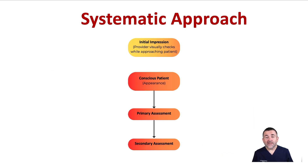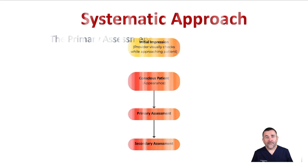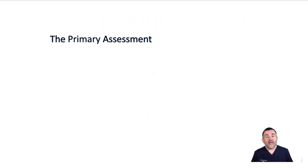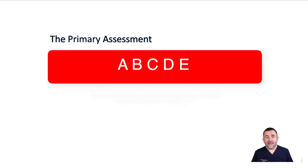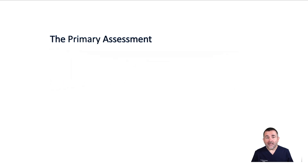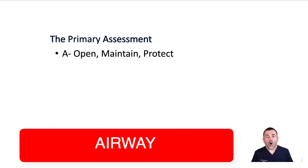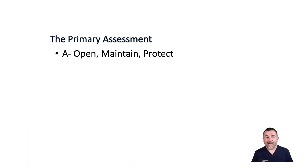Another time to use the primary and secondary assessment is if a patient is conscious. You can easily remember the steps of the primary assessment by thinking A, B, C, D, and E. Keep in mind that although these steps are listed in progressive order, the resuscitation team often performs them simultaneously. Airway: open, maintain, and protect.